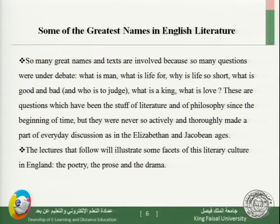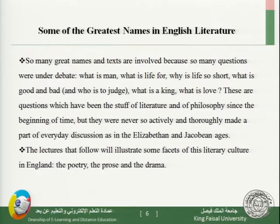So many great names and texts are involved because so many questions were under debate — questions like: What is a man? What is life for? Why is life so short? What is good and what is bad, and who gets to judge? What is a king, and what are the functions of the king? What is love? All these are huge questions that the educated elite of Renaissance England felt free to explore, write about and give opinions on. These questions have been the material of literature and philosophy since the beginning of time, and they were never so actively and thoroughly made part of everyday discussion as in Elizabethan and Jacobean literature.